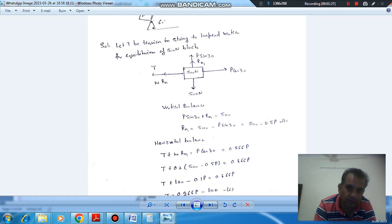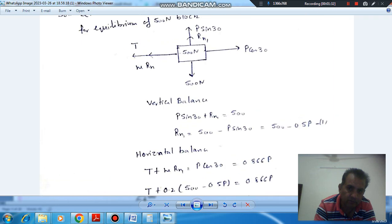So from vertical balance, we have P sin 30 plus R_N1 is equal to 500N. And R_N1 is 500 minus P sin 30 or 0.5P.